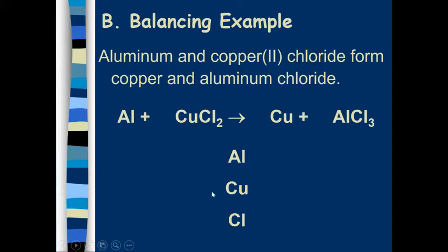Next, how many coppers do we have on the left? One. How many coppers do we have on the right? One. And how many chlorines do we have on the left? Two. And how many chlorines do we have on the right? Three. So this tells you that they're unbalanced because even though aluminum and copper have the same number of atoms, chlorine does not and they all have to have the same number of atoms.